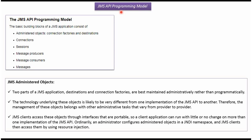In this video tutorial I will explain the JMS API programming model. Here you can see the basic building blocks of a JMS application: administrated objects like connection factories and destinations, connections, sessions, message producers, message consumers, and messages.